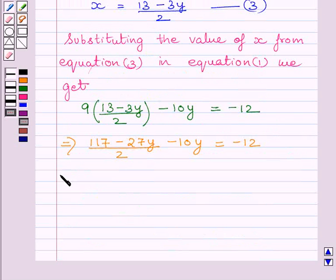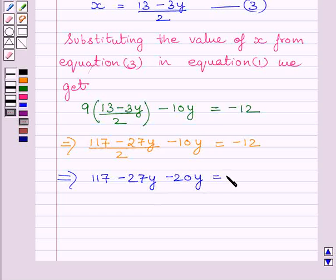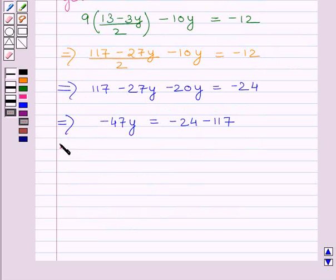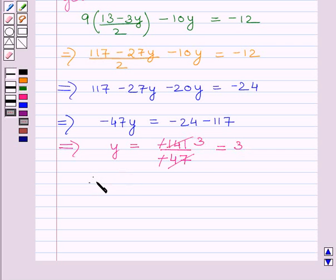Multiplying both sides by 2 we get 117 minus 27y minus 20y is equal to minus 24. This implies minus 47y is equal to minus 24 minus 117. This implies y is equal to minus 141 upon minus 47. Minus and minus sign get cancelled and 47 times 3 is 141. So we get y is equal to 3.